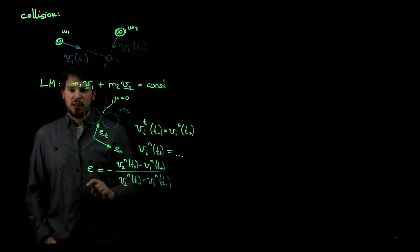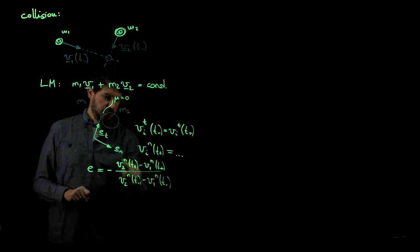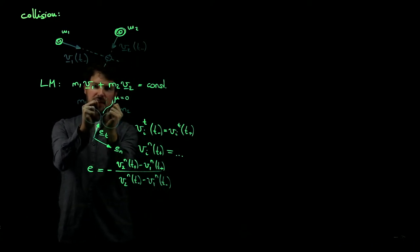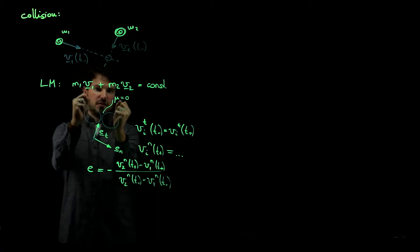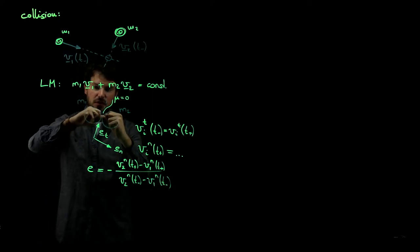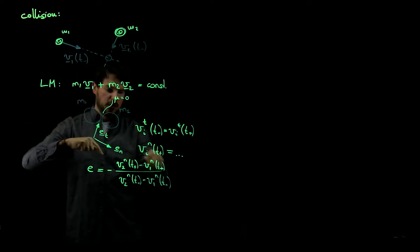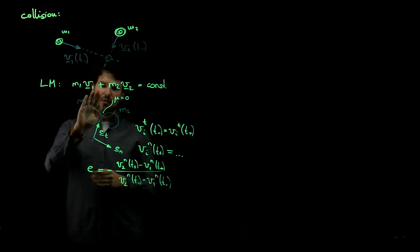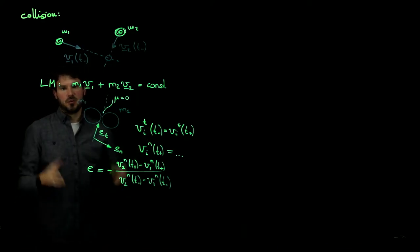Physically, the numerator is the relative separation velocity of the two particles in the normal direction after impact, and the denominator is the relative approach velocity before impact. So the coefficient of restitution relates the velocity at which the particles meet to the relative velocity at which they separate. This is very similar to a particle hitting a wall — if one particle is a wall, we recover the original single-particle definition. This lets us solve collision problems like pool billiards.